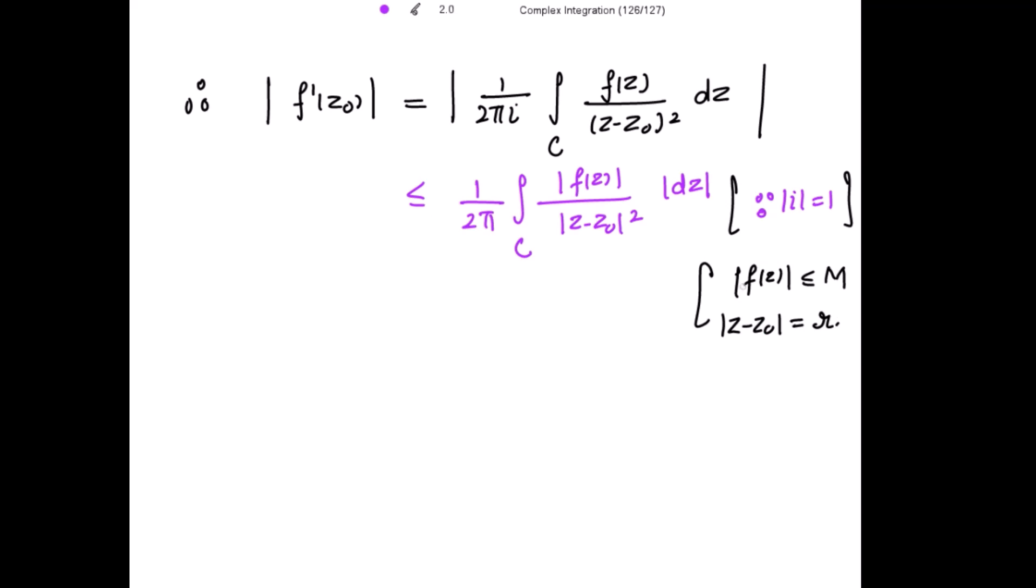So this is further, because mod of f(z) is less than or equal to M, so the sign becomes again less than or equal to 1 over 2π integral over C, M divided by this mod is r, so this is r squared mod of dz.